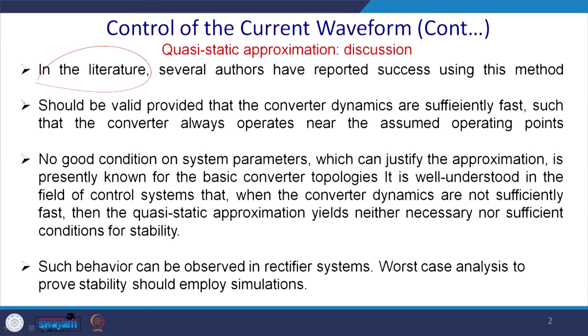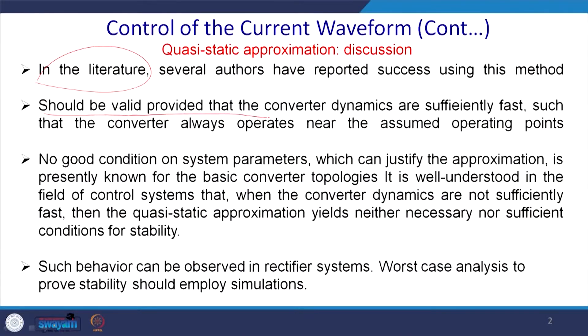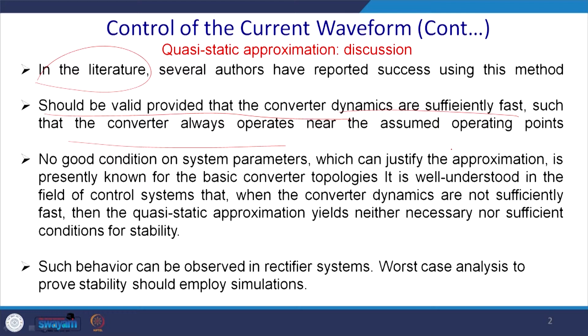If you study the literature you will find that several authors have reported several methods for the current control technique. We are required to check what is the best or optimal solution from our design. For this reason we should put some constraints to evaluate what is the best method of current control. It should be validated to provide the converter dynamics — one requirement is that it must be sufficiently fast, so that it can respond quickly to changes in load or other dynamics, such that the converter always operates near the assumed operating point, because that is where you have stability. Another condition is that no good condition on system parameters which can justify the approximation is presently known for the basic converter topology.